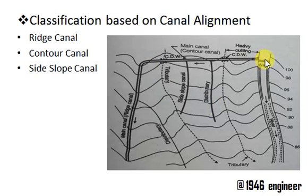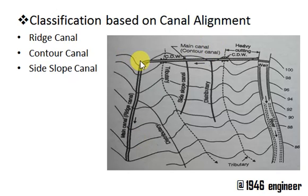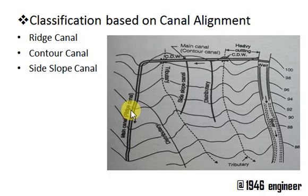When the canal from this natural river or reservoir is perpendicular to the natural water course, or when it is parallel to the contour, then we call it a contour canal. When the canal is almost perpendicular to the contour, or when it is parallel to the river course, then we call it a ridge canal or watershed canal.